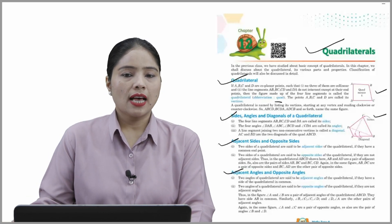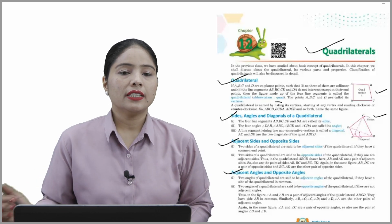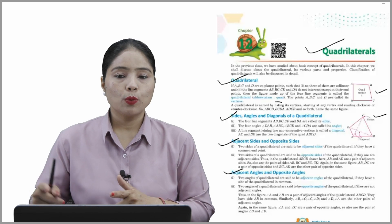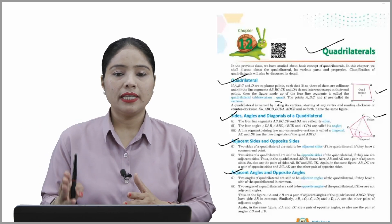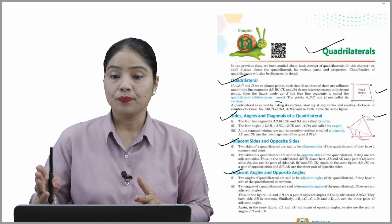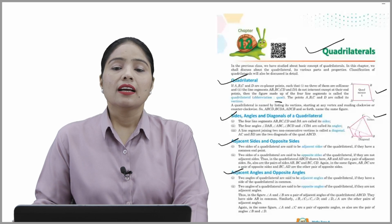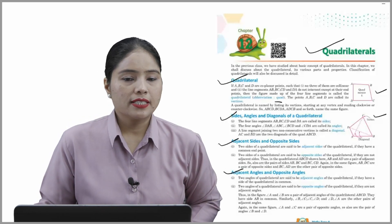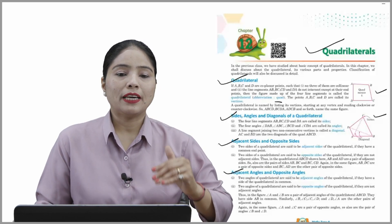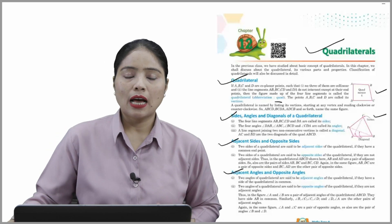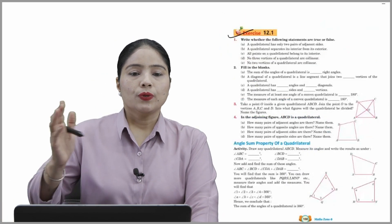Adjacent angles and opposite angles: two angles of a quadrilateral are said to be adjacent angles if they have a side of the quadrilateral in common. Two angles are said to be opposite angles if they are not adjacent. In the figure, angle A and angle B are a pair of adjacent angles as they have side AB in common. Similarly, angle BCD and angle CDA are other pairs of adjacent angles. Angle A and angle C are a pair of opposite angles, as are angle B and angle D.